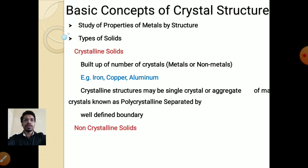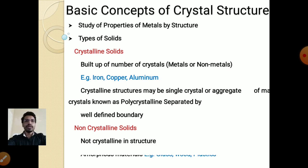The second type is non-crystalline solid. These are non-crystalline in structure — whatever structure is there is not in a regular pattern, that's why it is called non-crystalline. These non-crystalline solids are also called amorphous materials. Examples are glass, wood, and plastics.